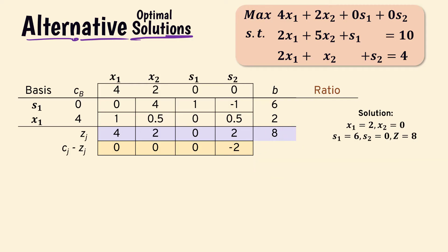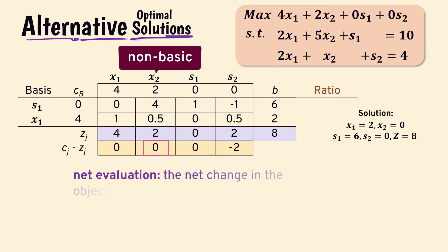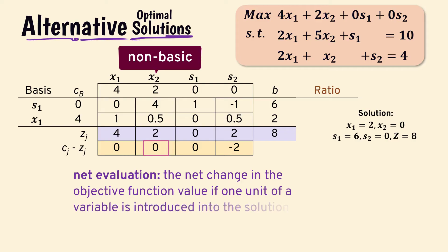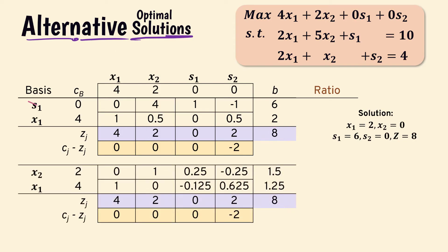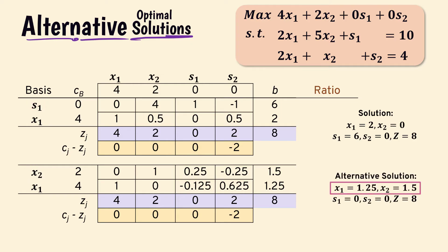Note that x2 is not in the basis and has a zero value in the net evaluation row. This is an indication that we may have alternative optimal solutions. Recall that the net evaluation entry for a variable represents the net change in the objective function value if one unit of the variable is introduced into the solution. Since x2 is 0 in the net evaluation row, we can introduce it without changing the objective function value of 8. Replacing s1 with x2 gives another solution point: x1 equals 1.25 and x2 equals 1.5, but with the same objective function value 8. Therefore, alternative optimal solutions exist if a non-basic variable has a zero net evaluation row value.